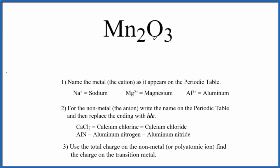To write the name for MN2O3, we first need to recognize we have a metal and a non-metal here. So we're going to treat this as an ionic compound when we write the name for MN2O3.